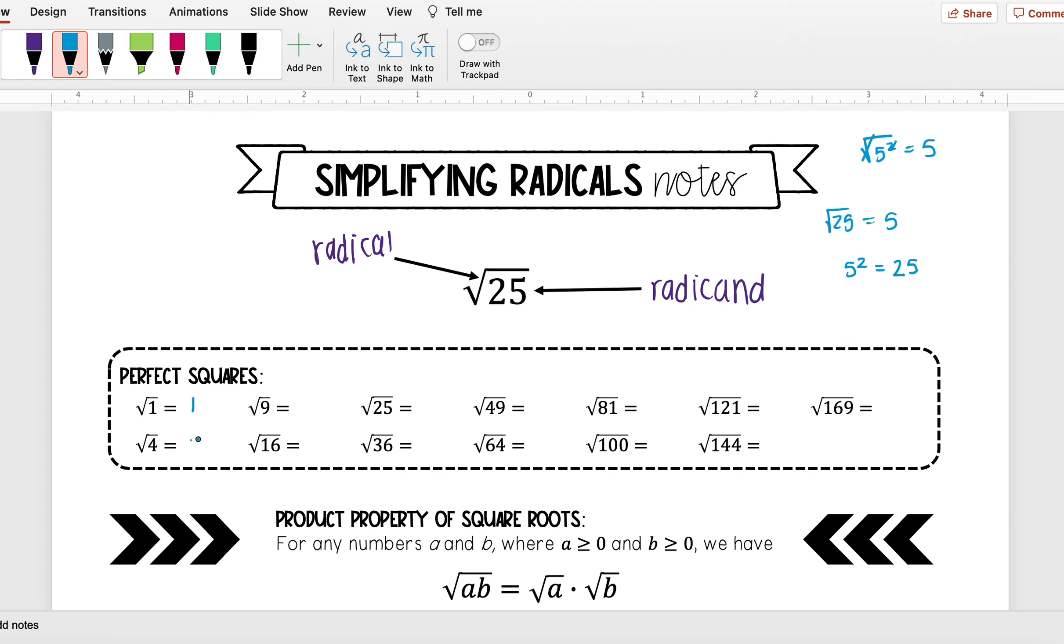Square root of 16 is 4, square root of 25 is 5, square root of 36 is 6, square root of 49 is 7, square root of 64 is 8, square root of 81 is 9, square root of 100 is 10, square root of 121 is 11, square root of 144 is 12, and square root of 169 is 13.